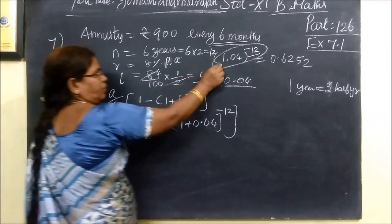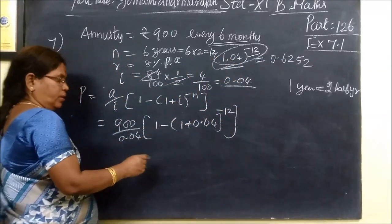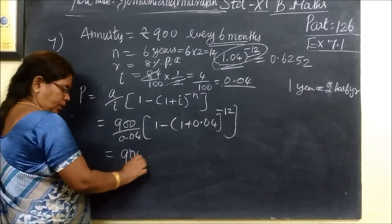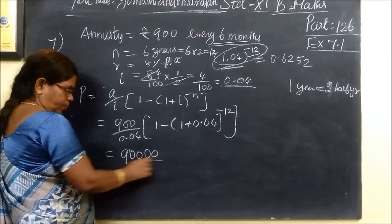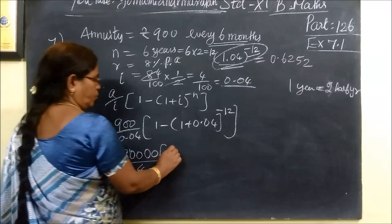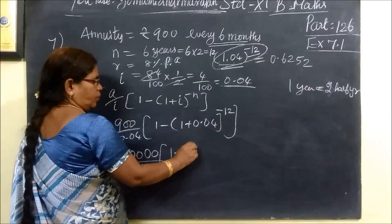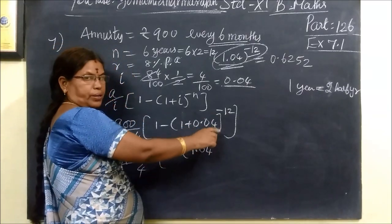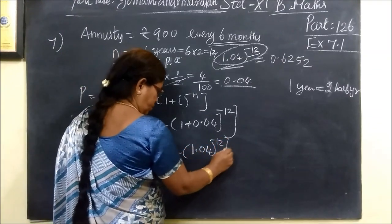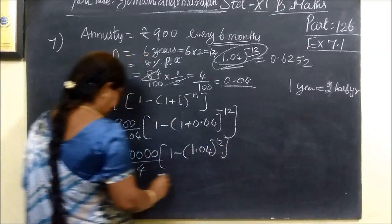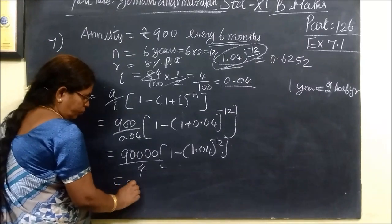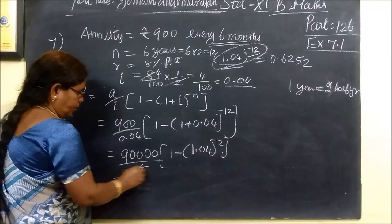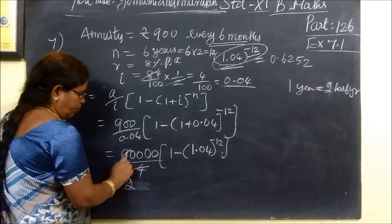This is equal to 900 by 4. Then 1 minus 1.04, 1 plus 0.04 equals 1.04 to the minus power. We are going to cancel, 2 times balance 1, then 2 times balance 2, 5 times.